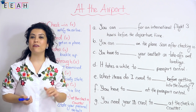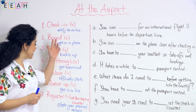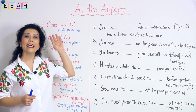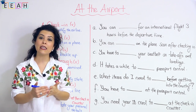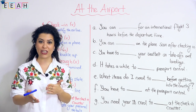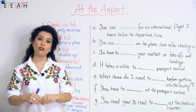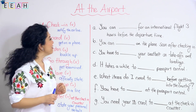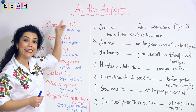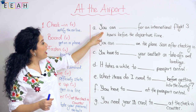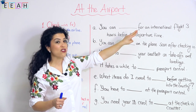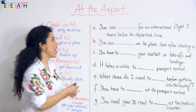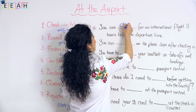We'll continue with some verbs that we need at airport situations. I've written down seven of them today. The first one is 'to check in.' To check in means to notify the airline that you have arrived and to give in your bags and get your boarding pass to get on the plane. For example: you can check in for an international flight three hours before departure time.